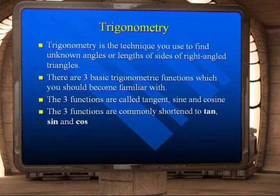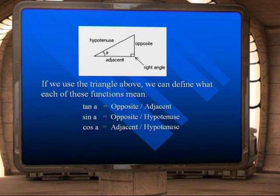The three functions are commonly shortened to tan, sin and cos. So let's consider this right angle triangle here. The longest side of a right angle triangle is called the hypotenuse. The side opposite the angle is called the opposite, and the side adjacent to this is called the adjacent.